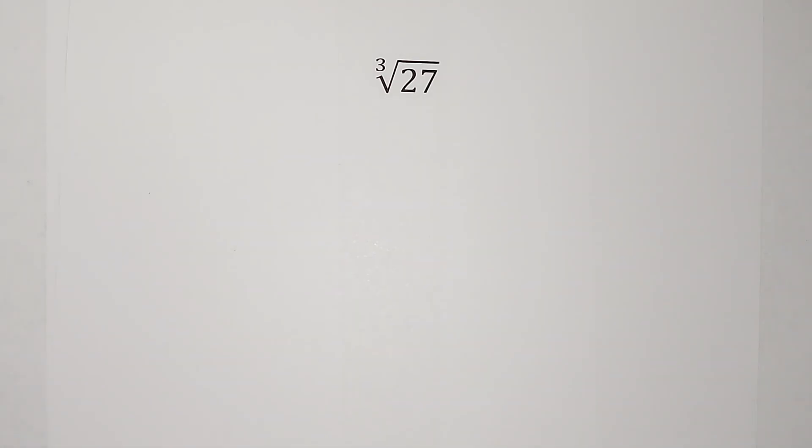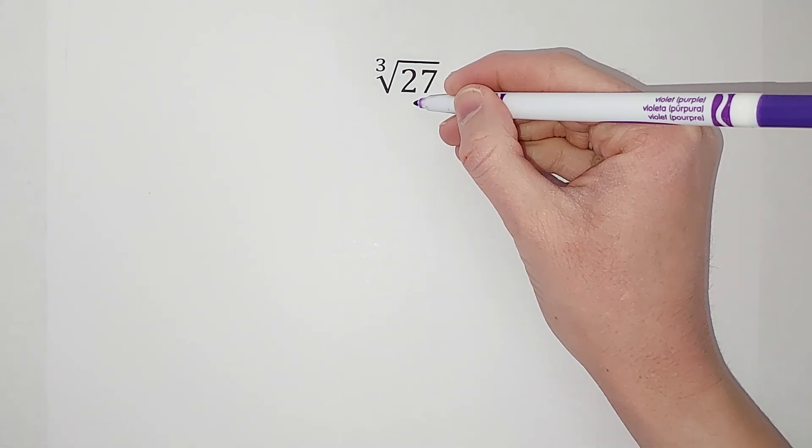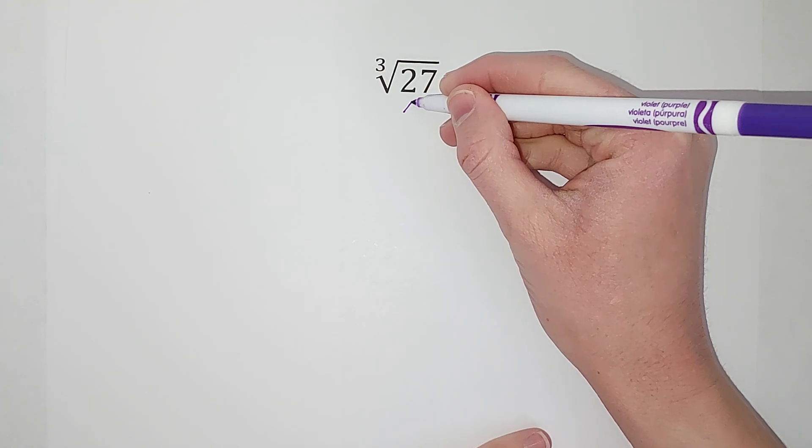So we want to know what number multiplied by itself three times gives me 27. Now you might have already figured it out, but let me show you how to do it if the answer isn't obvious to you, which a lot of times it won't be. Okay, so we're going to break this down.